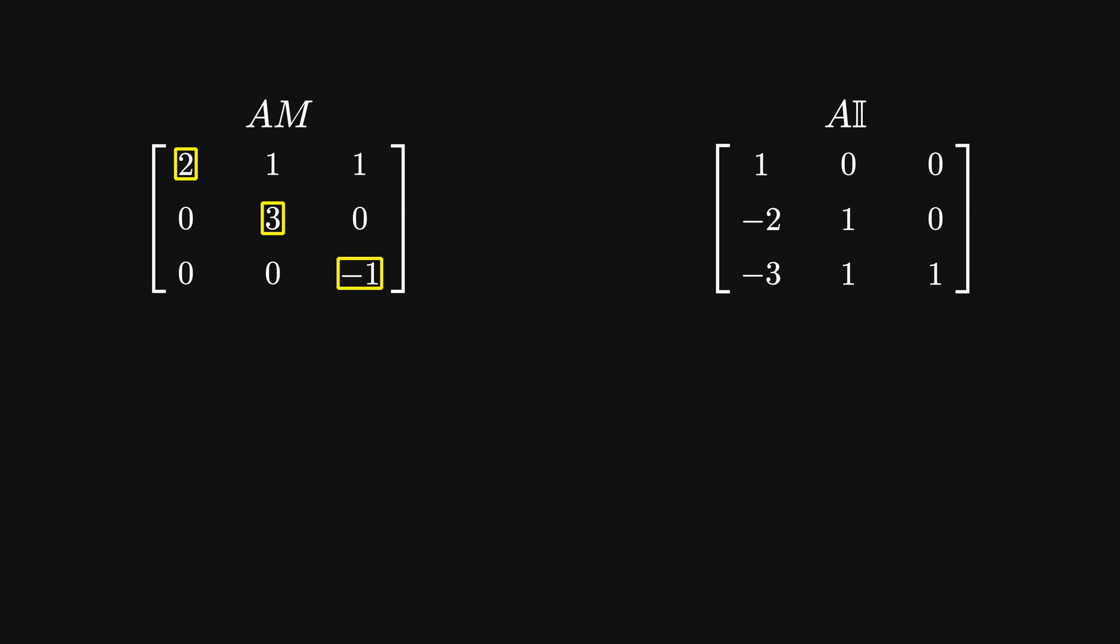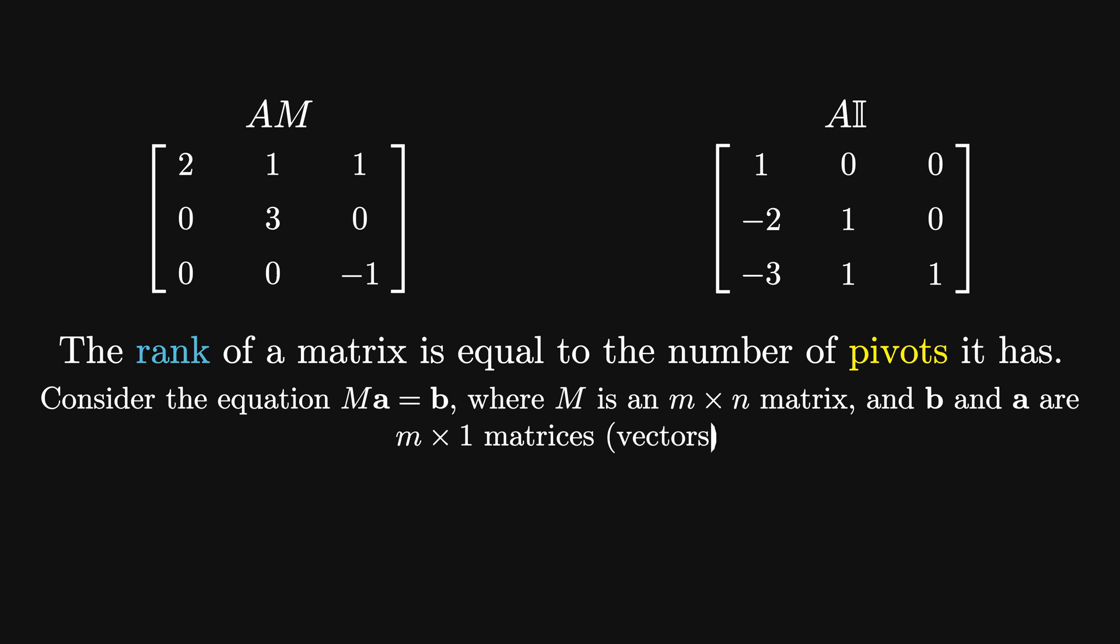Putting a matrix in row echelon form gives us a lot of information about it, particularly if we're thinking about solving a system of linear equations. The rank of a matrix is the number of pivots it has. Consider the equation MA equals B, where M is an m by n matrix, and B and A are m by 1 matrices. MA equals B is considered consistent if and only if the rank of M is equal to the rank of the augmented matrix [M|B].